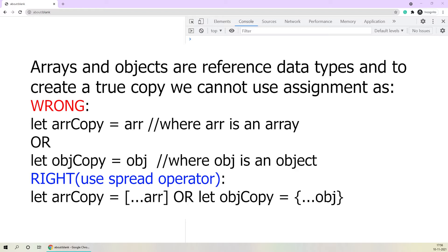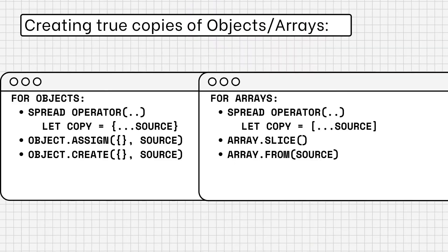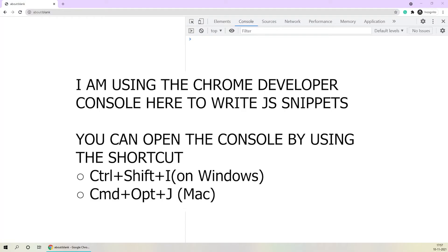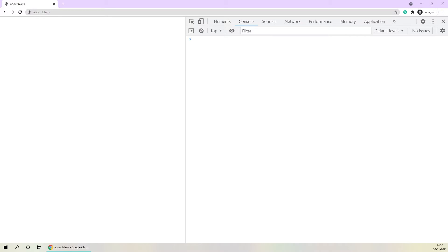Let's go over all of those methods once again. As I mentioned in the previous video, there is a catch in all of these methods — they will be creating what's known as a shallow copy. Now to understand what a shallow copy really is, let's write some code. We'll be creating a person object which also has a nested address object within it.